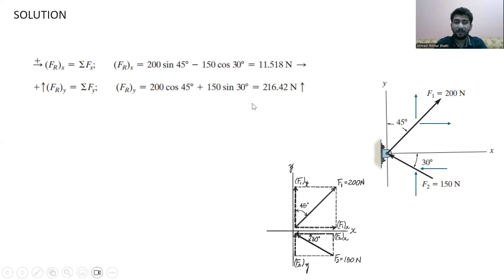And in case of the forces in the y-direction, we have 200 cosine 45 degrees plus 150 sine 30 degrees, and we get 216.42 Newton. Now we can find the magnitude of the resultant force, which is about 217 Newton.